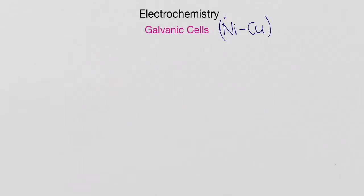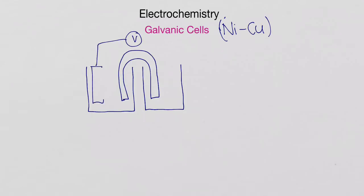I'm going to start by drawing out the general setup for a galvanic cell. So we have a beaker on the left, a beaker on the right, and we've got a salt bridge that connects the two, and then a voltmeter connected to two electrodes.